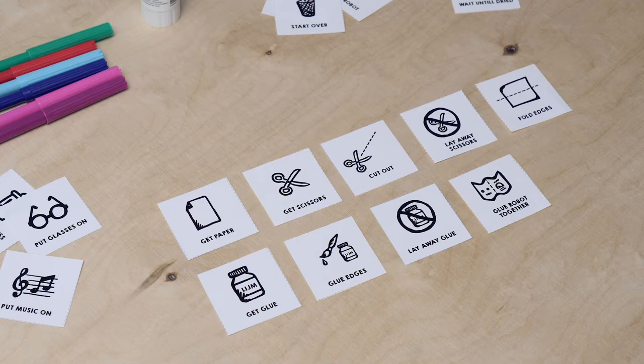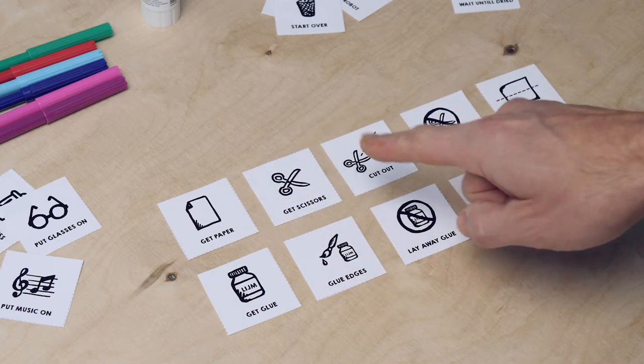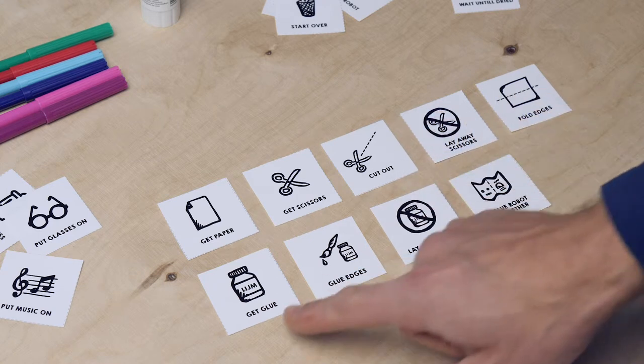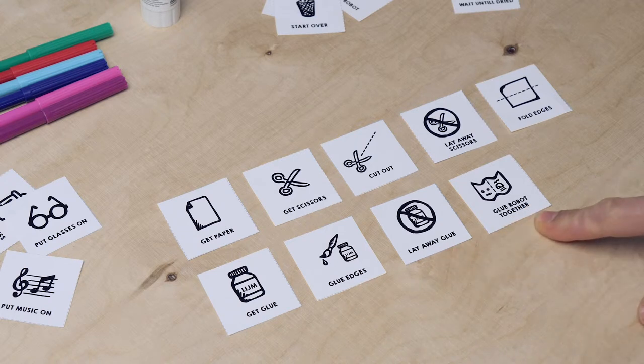And did it work? I'm very curious. My program looks like this. Get paper, get scissors, cut out, put away scissors, fold edges, get glue, glue the edges, put away glue, and glue together.